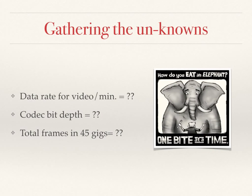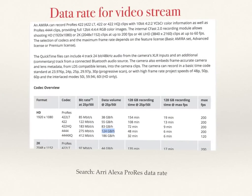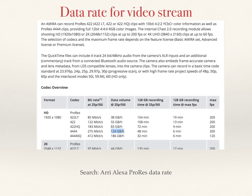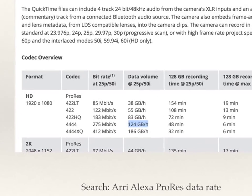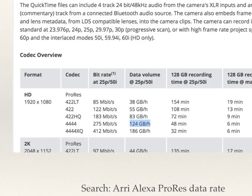We now need to gather the unknowns. How do you eat an elephant? One bite at a time. The data rate for video per minute, the codec bit depth, and the total frames for 45 gigs are our fundamental unknowns. The first place to look for data rates is ARRI's website. Search 'ARRI Alexa ProRes data rate' and one of the links will go right to their site. They have a nice table showing various codecs, rasters, and frame rates. We can see the 444 codec is 275 megabits per second, or roughly 124 gigabytes per hour.